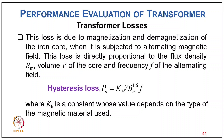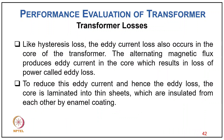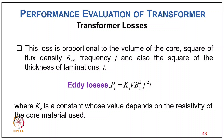Hysteresis loss Ph = Kh × V × Bm^1.6 × f, where Kh is a constant depending on the magnetic material used. Similarly, eddy current loss also occurs in the core due to alternating flux inducing eddy currents, and to reduce this loss, the core is laminated into thin steel sheets insulated from each other by enamel coating. Eddy current loss Pe = Ke × V × Bm² × f² × t², where t is the thickness of lamination and Ke depends on resistivity of the core ferromagnetic material.